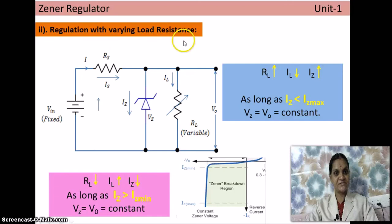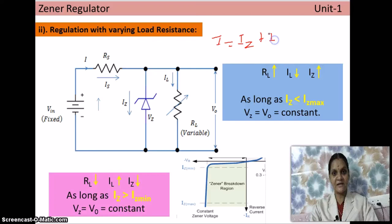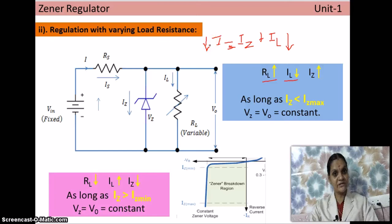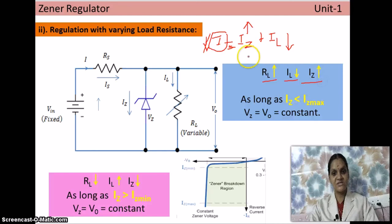To satisfy these conditions, RS and RL must be properly chosen. Case 2: Regulation with varying load resistance. Here V_in is fixed and RL is varying, so IL also varies. The equation I equals IZ plus IL must still be satisfied at all times. If RL increases, IL decreases. Since V_in is constant, the total current I must remain constant, so the decrease in IL is compensated by a corresponding increase in IZ.